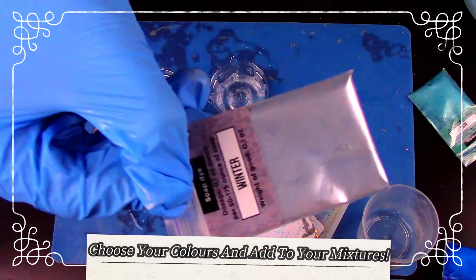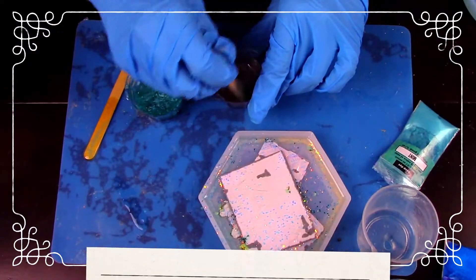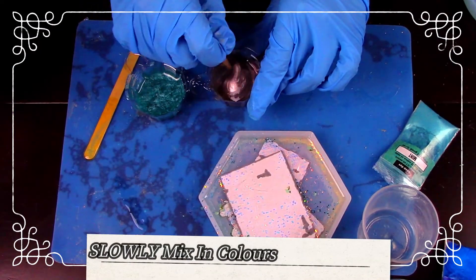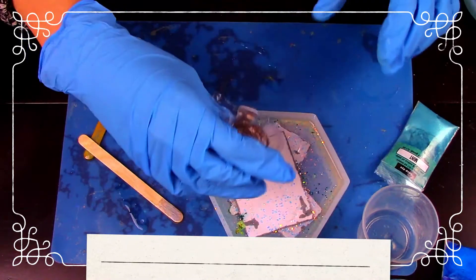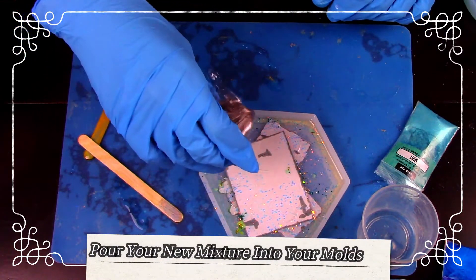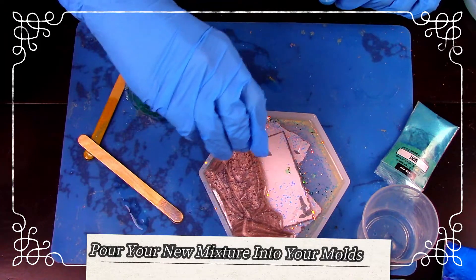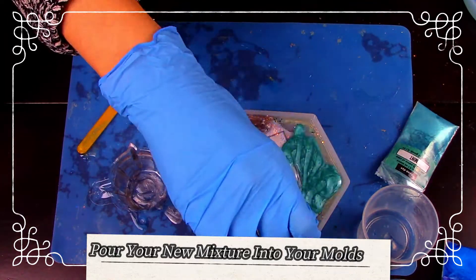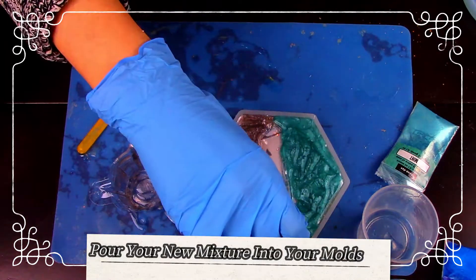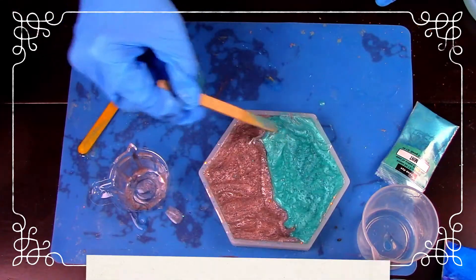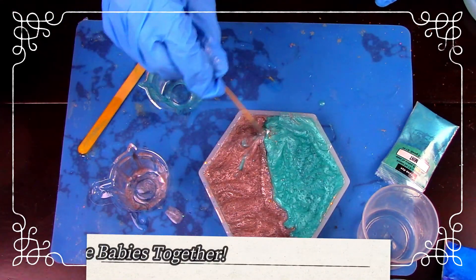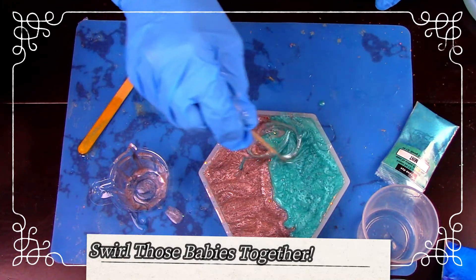Choose your colors for your next mold and add them to your mixtures and mix slowly. Once again, pour your resin on separate sides of the mold. Now swirl the colors together a little bit or do any fun design you choose.